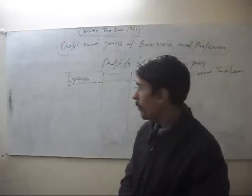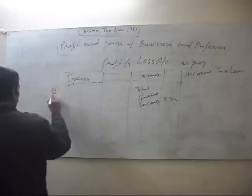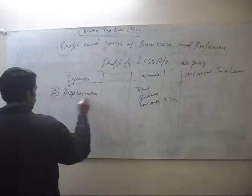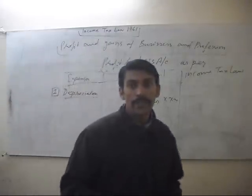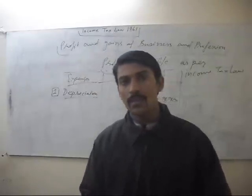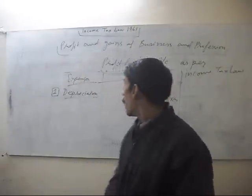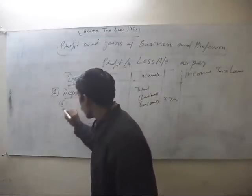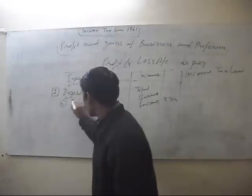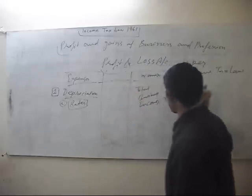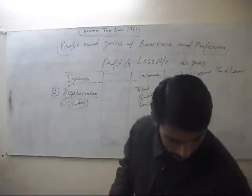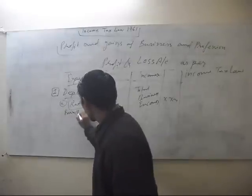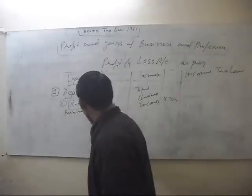What should we write on the debit side? Number one: depreciation. Depreciation is an important expense of business — it is not paid in cash but it is allowed as per Income Tax Law. The rates allowed by Income Tax Law apply here. For example, for furniture, we will charge 10%.